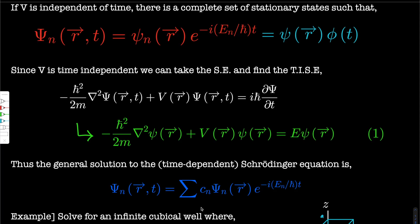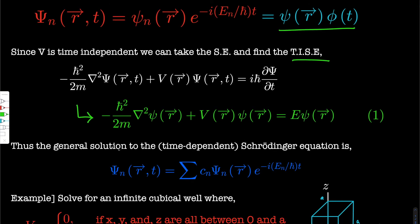We have two variables here, but the similar logic applies to three variables and time — so four variables. If V is time independent, there is a complete set of stationary states such that psi of n is a function of position times a function of time. Since V is time independent, you can take the Schrödinger equation, solve, and find the time independent Schrödinger equation, shown in green. You sub this in for psi and divide by this function times this function — a little algebraic manipulation gives you that. The general solution to the time dependent Schrödinger equation is this, and you can verify it by substituting in and checking the left-hand side equals the right-hand side.